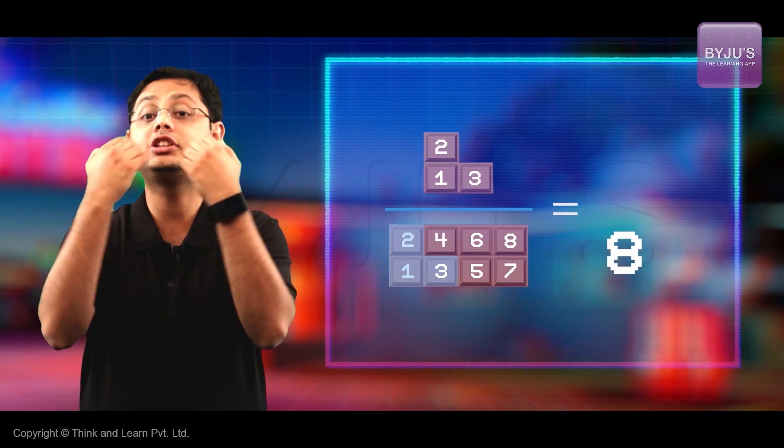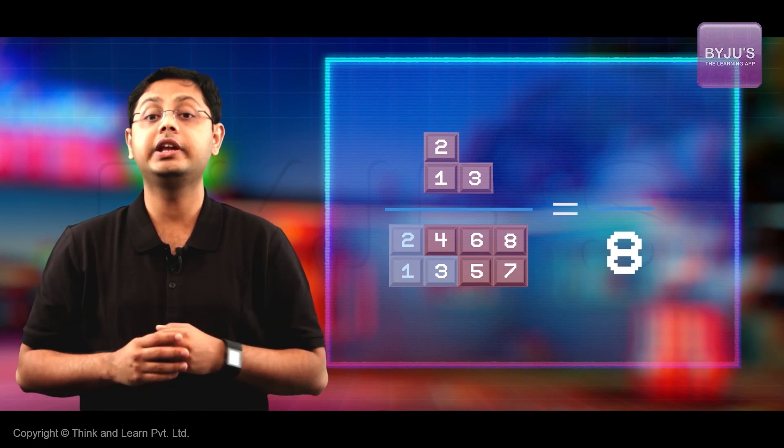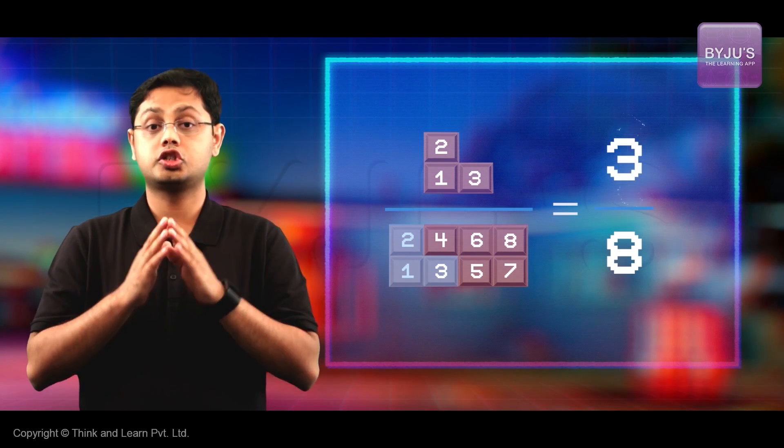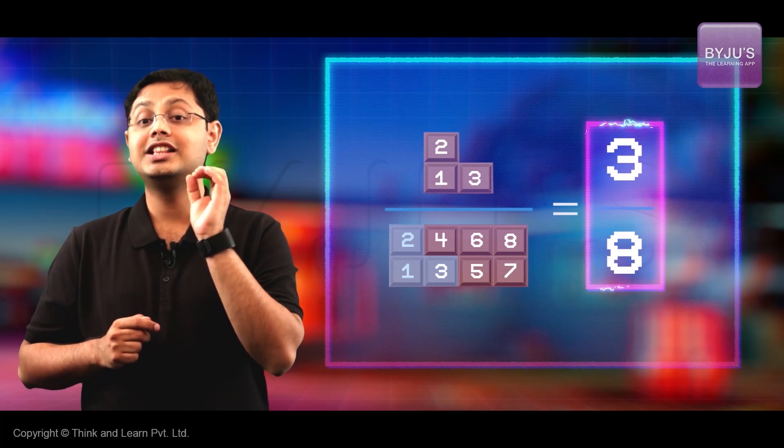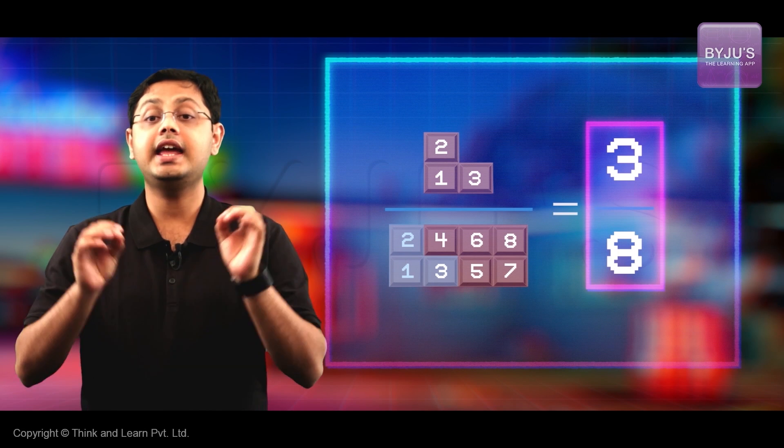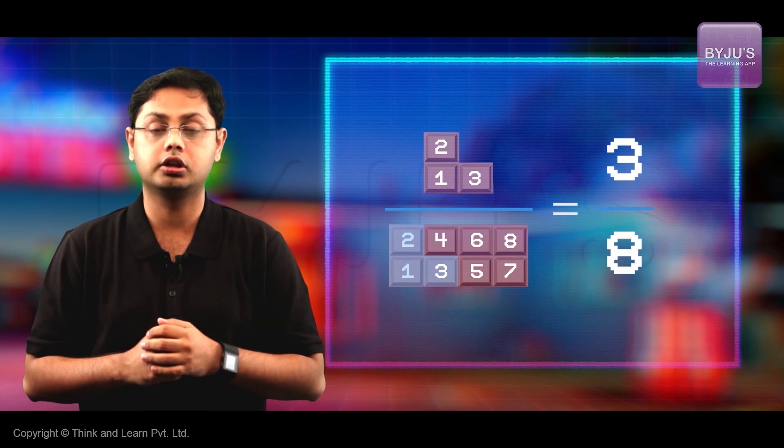And since you have three of those parts, the numerator will be three. So, the fraction of the chocolate that I'm giving you is three over eight or three eighths of the whole chocolate.